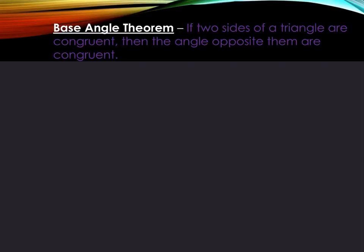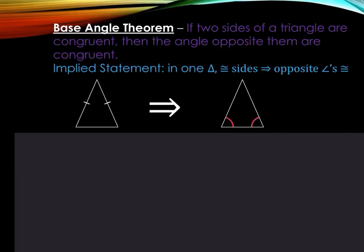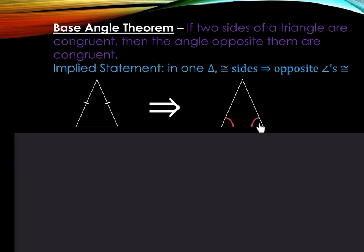Here are a couple of theorems we need to get familiar with. The first is the Base Angle Theorem. It states that if two sides of a triangle are congruent, then the angles opposite them are congruent. The implied statement shortens this to: in one triangle, congruent sides implies opposite angles are congruent. We have two equal marks on each of the legs, so if we have two congruent legs, then the angles directly across are also congruent.